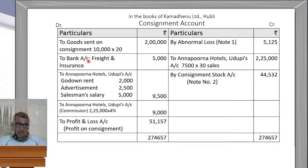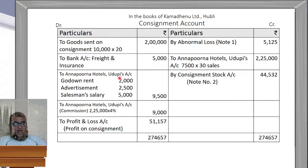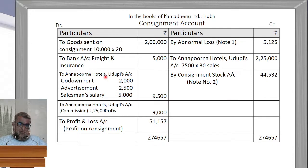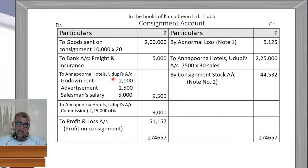The consignee's expenses — Annapurna Hotels — are recorded as 'By Annapurna Hotels Account': godown rent Rs. 2,000, advertisement Rs. 2,500, salesman's salary Rs. 5,000, totaling Rs. 9,500. These expenses are not paid by bank account directly by Kamadenu, but by Annapurna, so they are debited to Annapurna Hotels account. Next, we record the abnormal loss: 250 kg was accidentally destroyed.